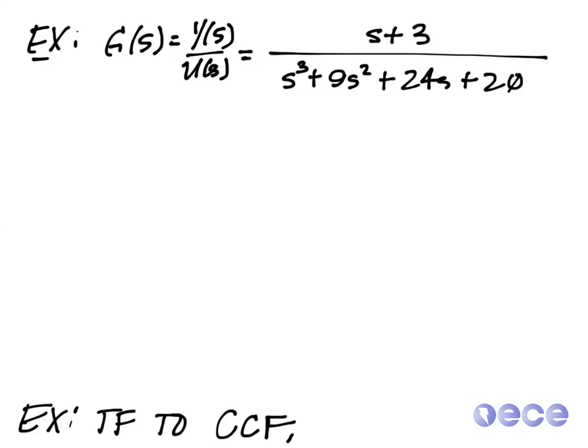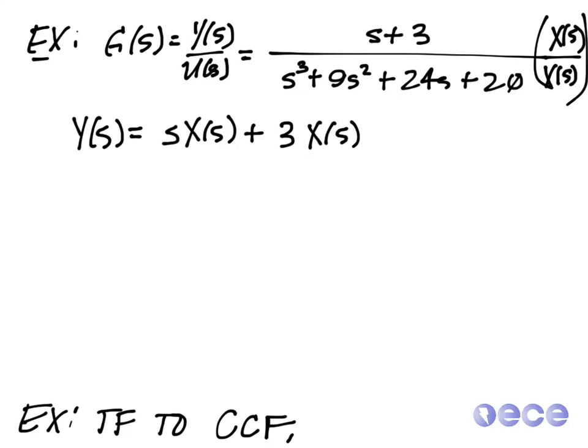So I'm going to take this transfer function, and now I can write Y of s is equal to s times X of s plus 3 times X of s, because I'm going to multiply the top and the bottom times X of s. So now that I've done this, I can see that U of s will be equal to s cubed times X of s plus 9s squared times X of s.